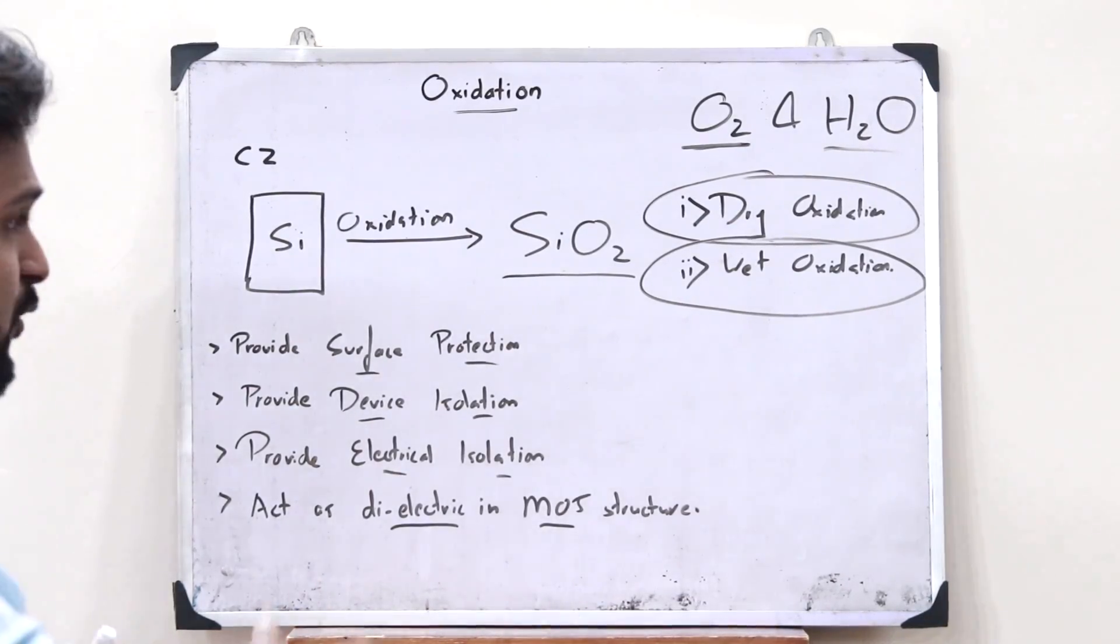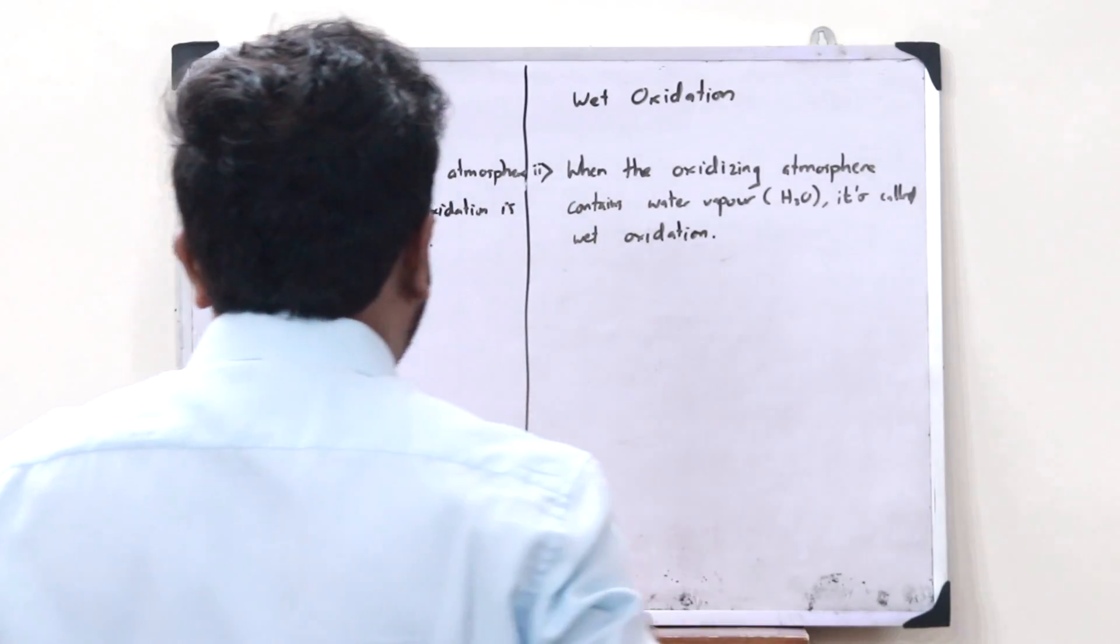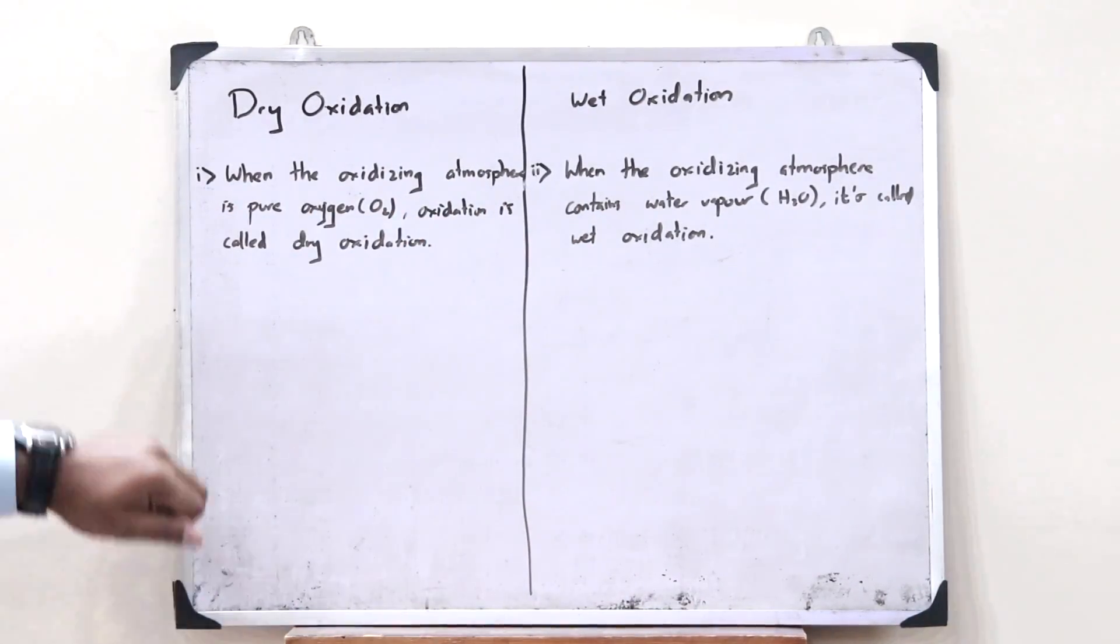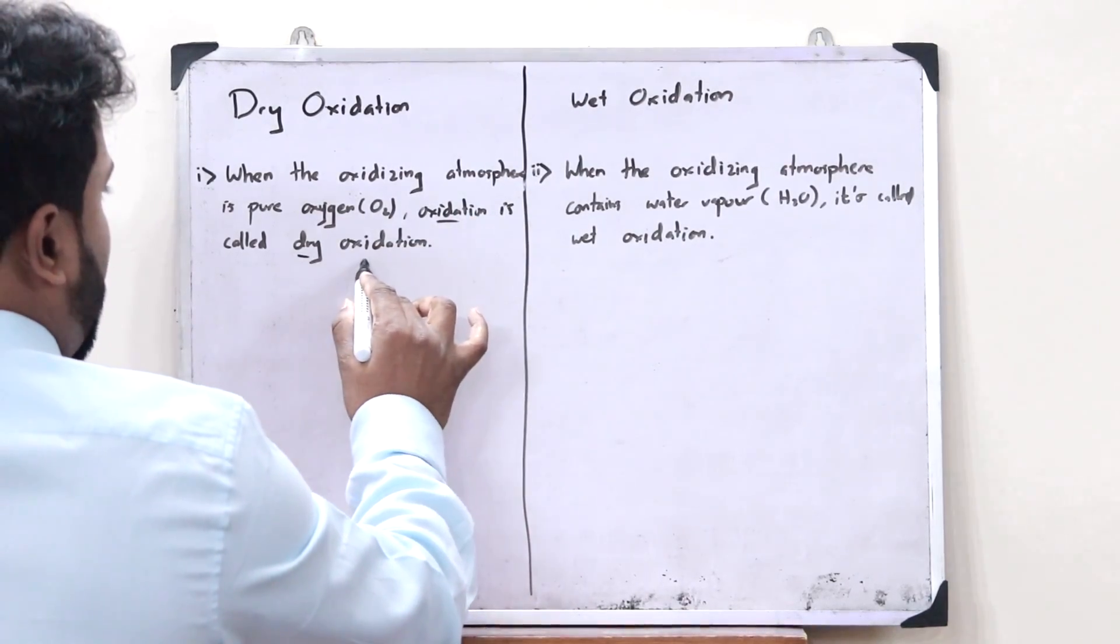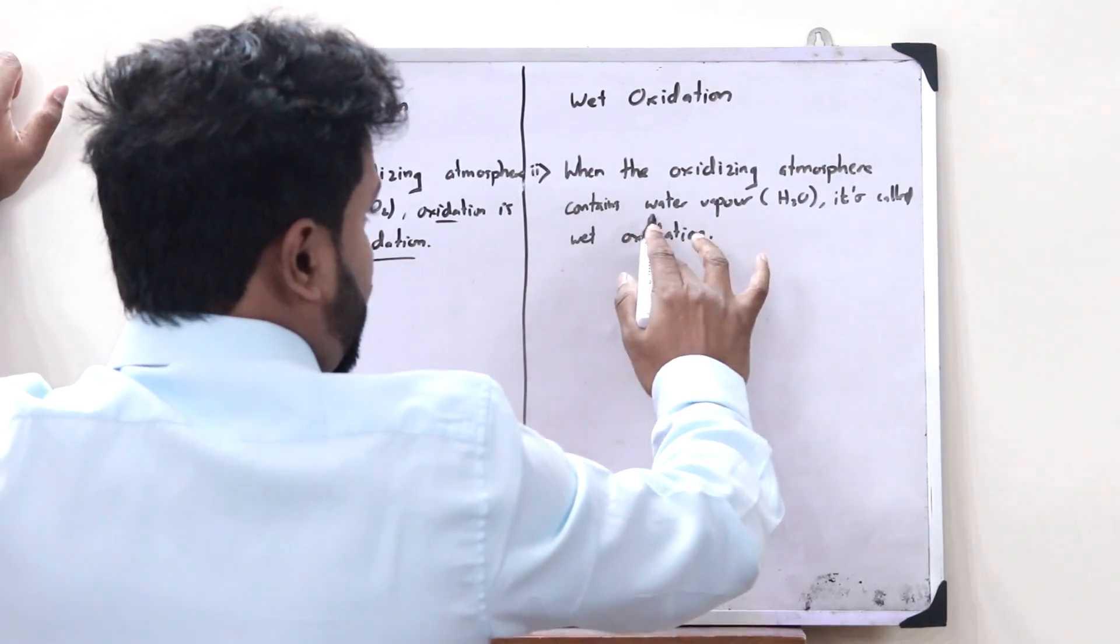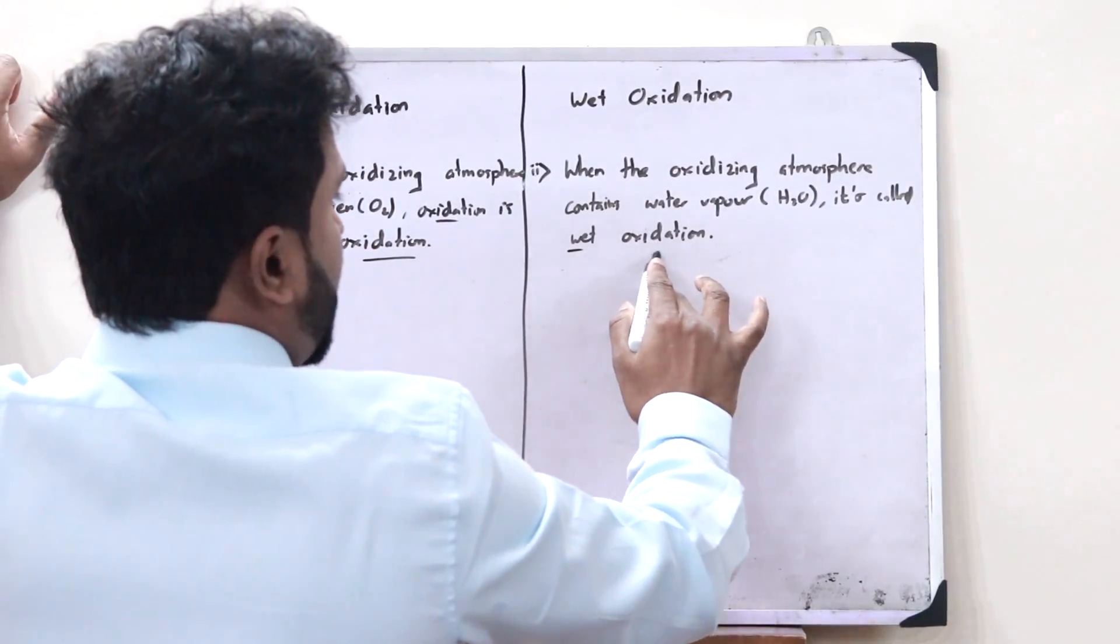Let's now see the difference between dry oxidation and wet oxidation. The first difference is that when the oxidizing atmosphere is pure oxygen, then the oxidation is referred to as dry oxidation. But on the contrary, when the oxidizing atmosphere contains water vapor, that is H2O, then it is called wet oxidation.